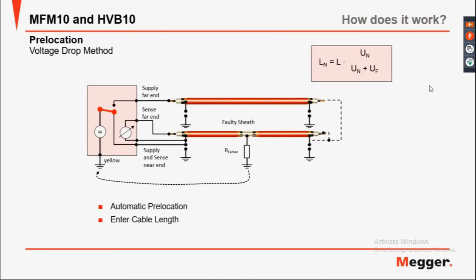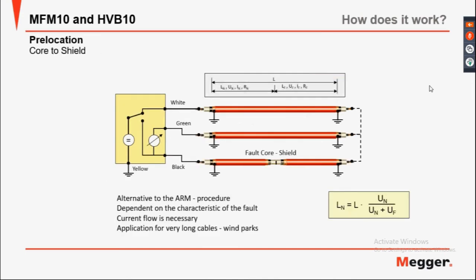The volt rod method. Pre-location from fault to shield: an alternative to the Murray procedure, depending on the characteristics of the fault. Current flow is necessary in application for very long cables, usually offshore wind plants.